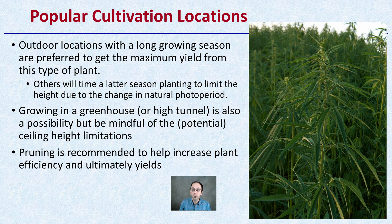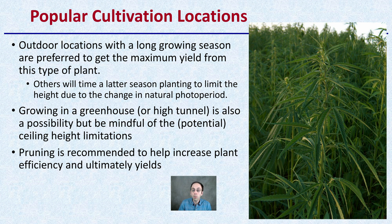Popular cultivation locations for sativas are outdoors in areas with a long growing season, because of the height they get, to maximize yield. Others will time planting later in the season to limit height due to the change in natural photoperiod. If you are growing in a greenhouse, high tunnel, or somewhere with a ceiling limit, be mindful of the potential limitations on how tall the plant could get, as it may outgrow your location. Pruning is recommended to help increase plant efficiency and ultimately the yields.